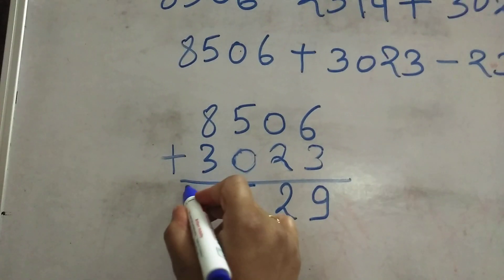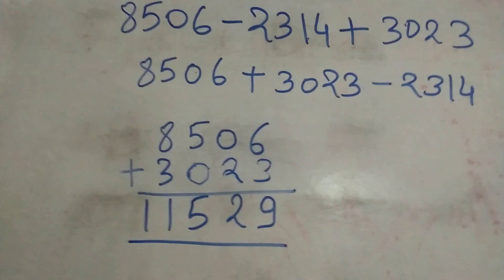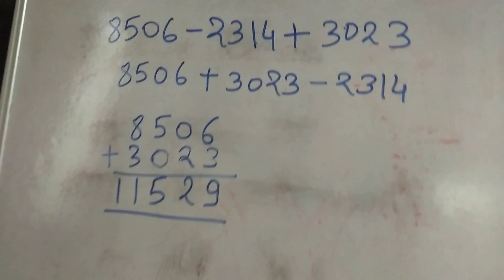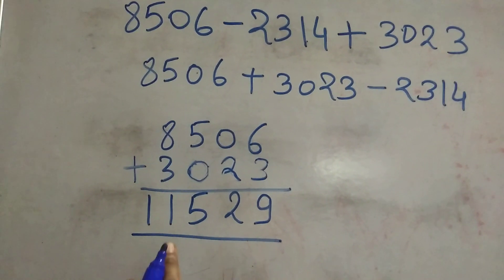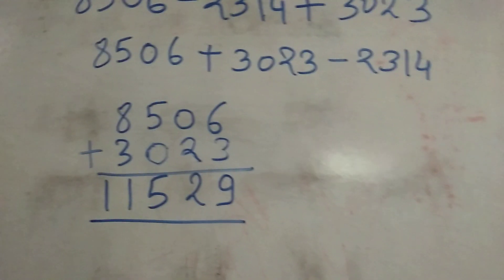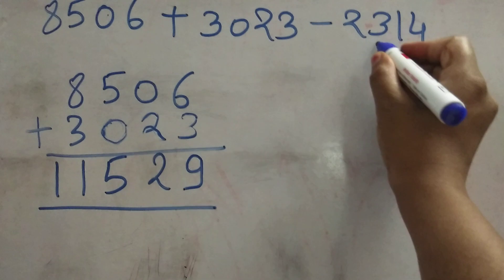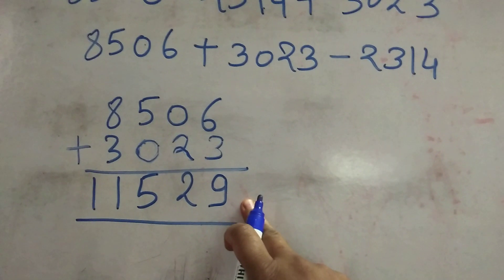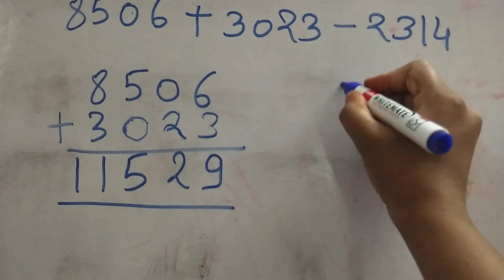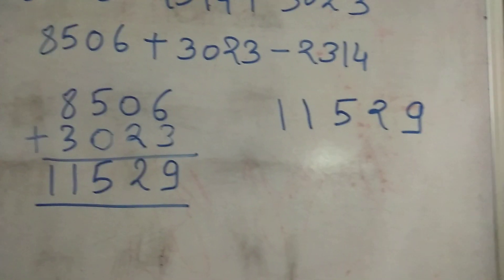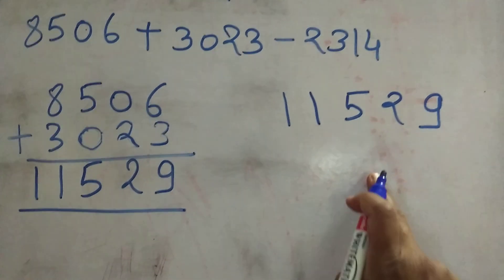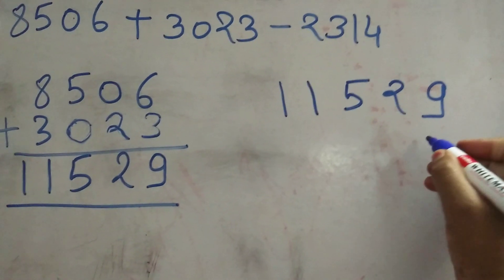OK, so this number, how we read this number, it's 11,529. Now we will subtract this number from this sum, 11,529. And very carefully we will write this number below this number.